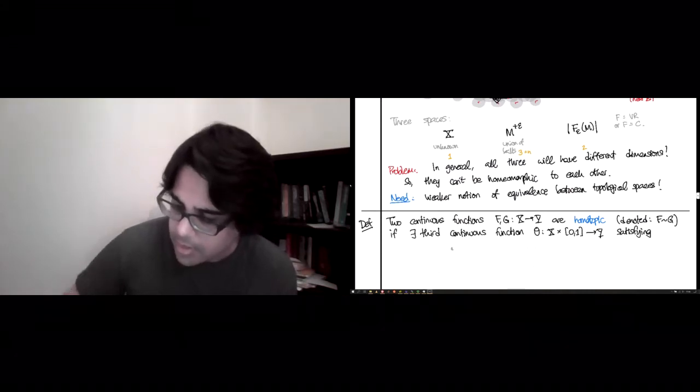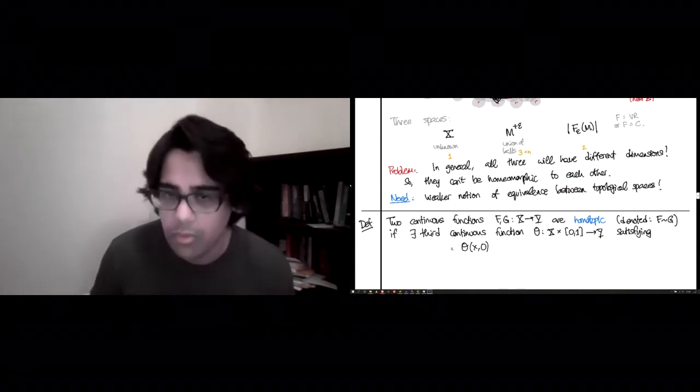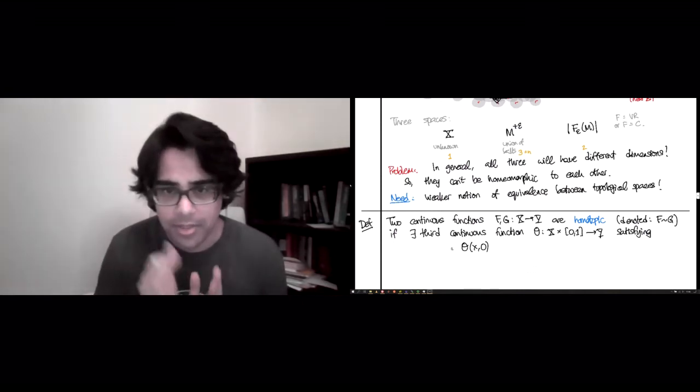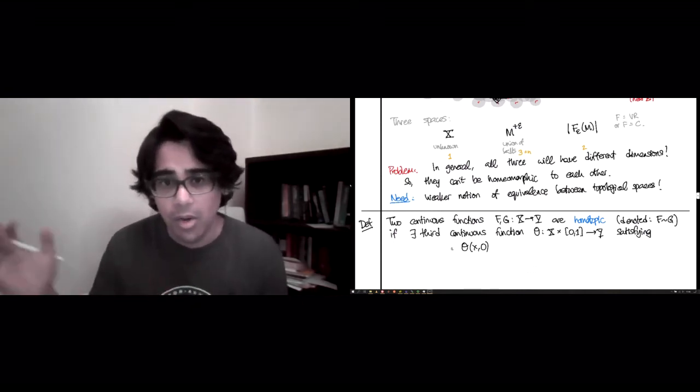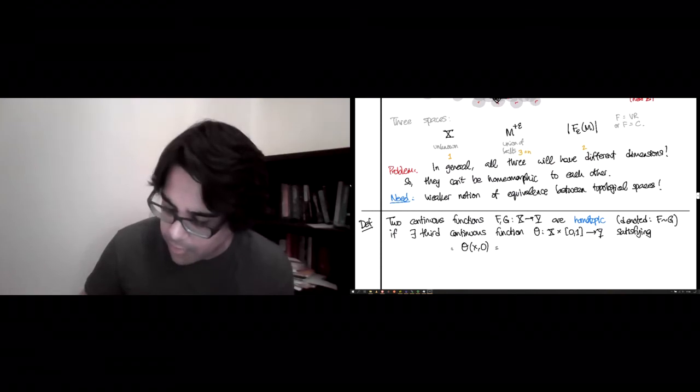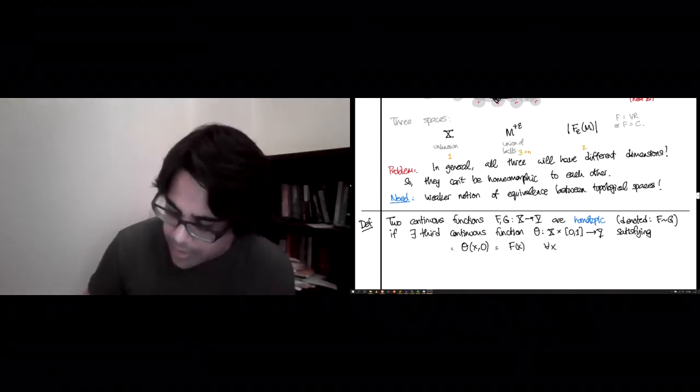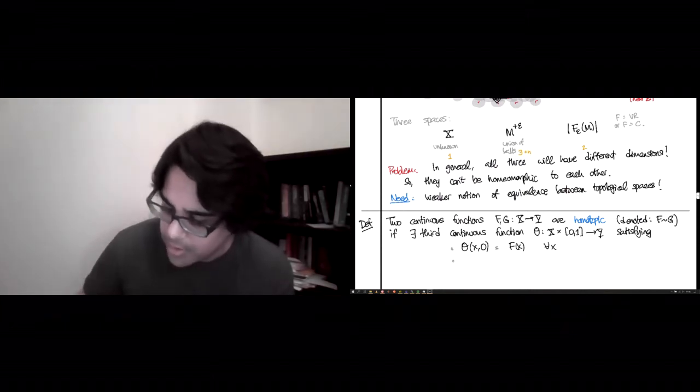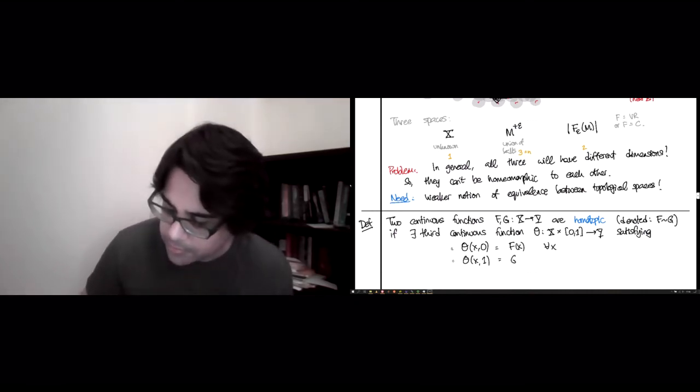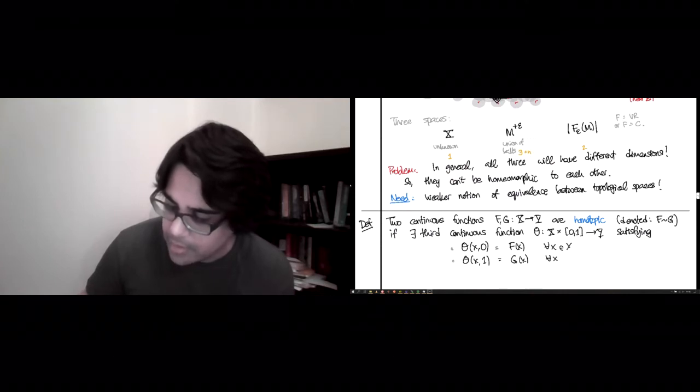Let's call it theta, and this time it's not going from X to Y. It's going from X cross the unit interval to Y, satisfying two conditions. The first condition it must satisfy is that theta of x, 0, so it's defined on a product, so there's an x term and then there's something living between 0 and 1. When that thing is slid all the way to 0, this variable living between 0 and 1, then you recover f. And at the other end, you will be hopefully not surprised to know that at the other end, when you slide it all the way up to 1, you get g of x. So this is for all x in X, this is also for all x in X. That's it.